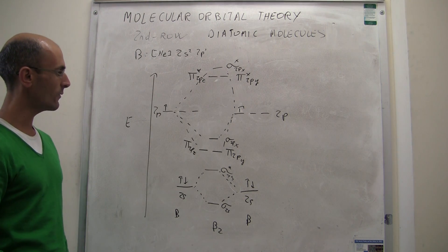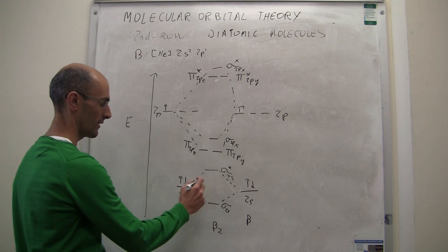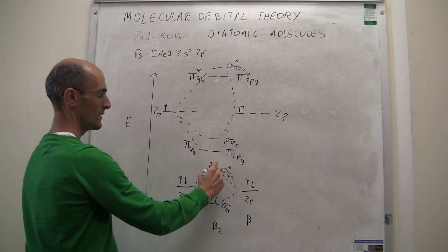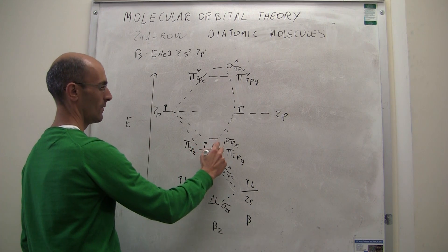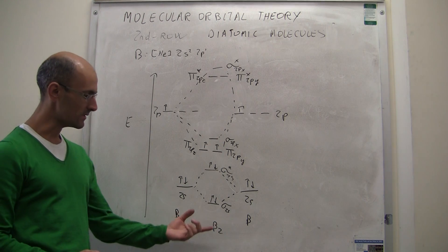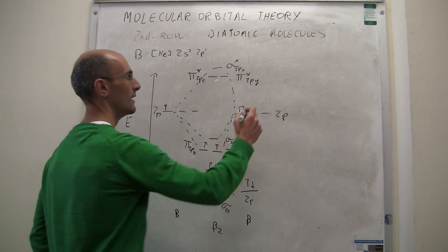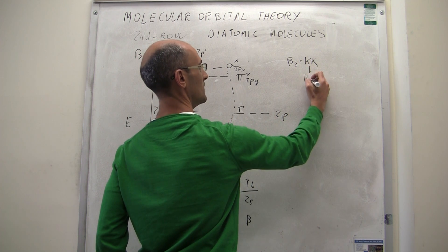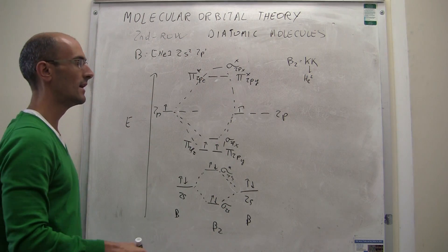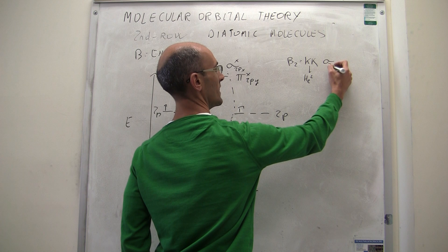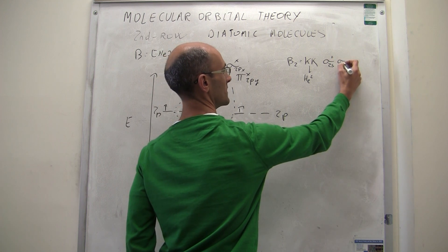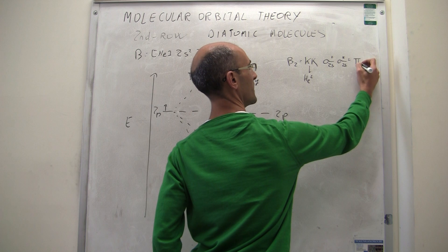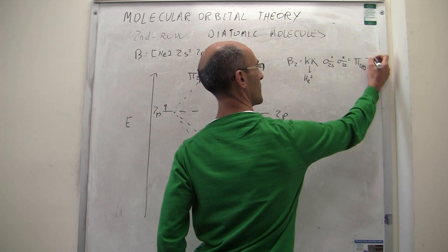We now have our molecular orbital diagram and just have to fill it with electrons. For boron-2, we have 2+2 = 4, then 5, 6 total electrons. The first two go into sigma 2s, the next two into sigma 2s*, and the last two go into the pi 2p orbitals. The electronic configuration of boron-2 is: KK (sigma 2s)² (sigma 2s*)² (pi 2py)¹ (pi 2pz)¹.